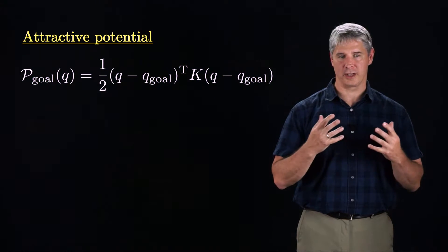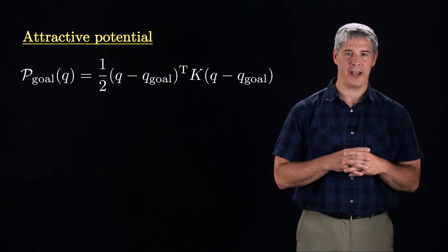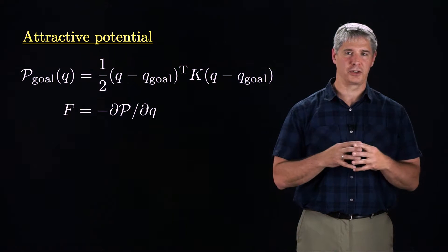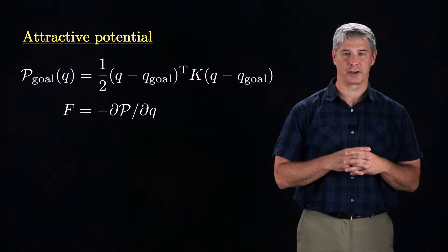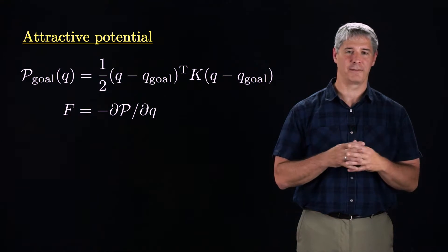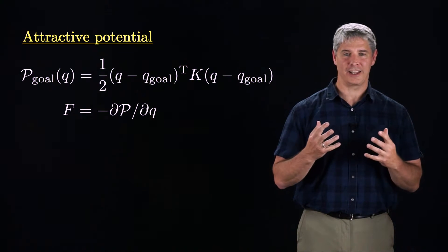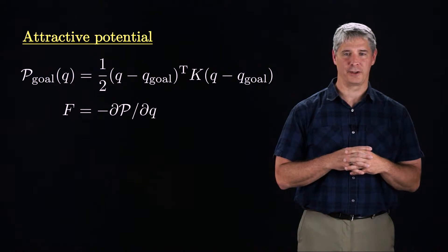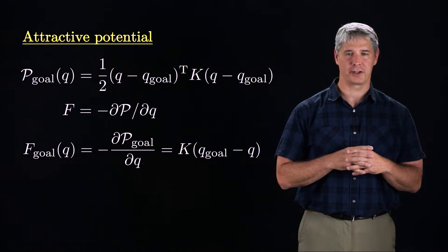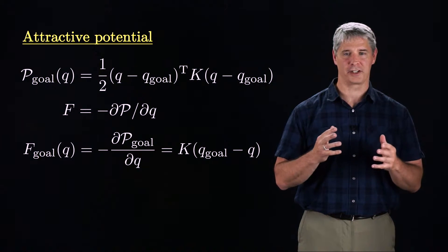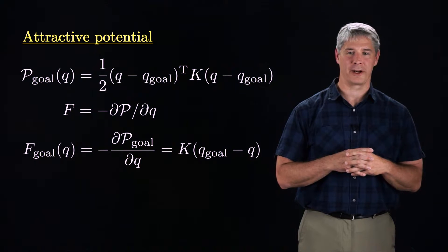From physics, or from the Lagrangian approach to dynamics from Chapter 8, we know that the force due to a potential field is the negative of the gradient of the potential with respect to the configuration Q. Taking the gradient of our artificial potential field, the force on the robot is proportional to the vector from the current configuration to the goal configuration, as you would get from a spring.